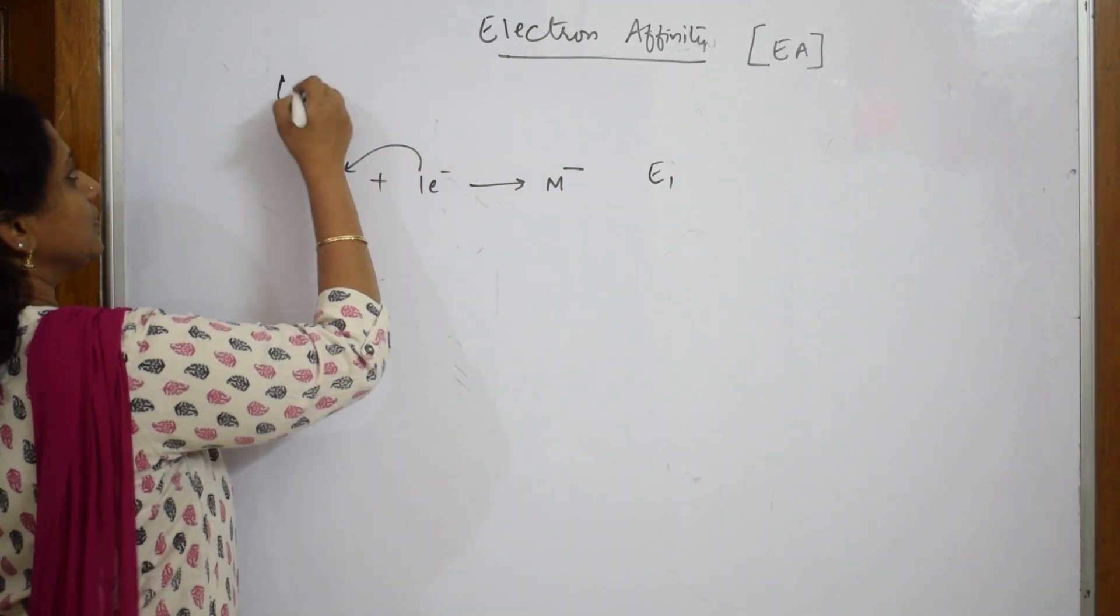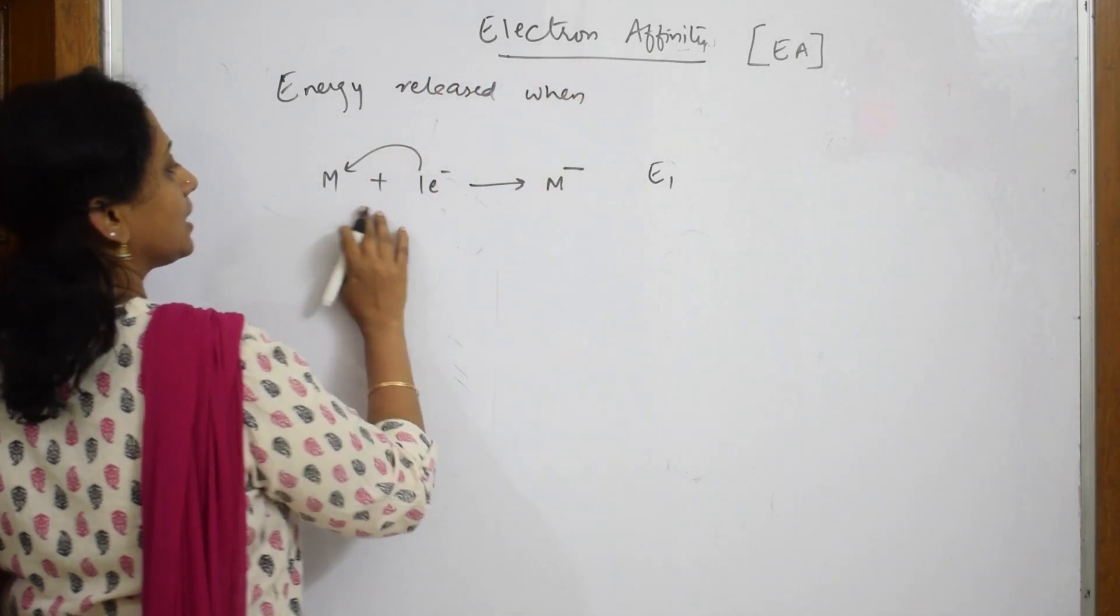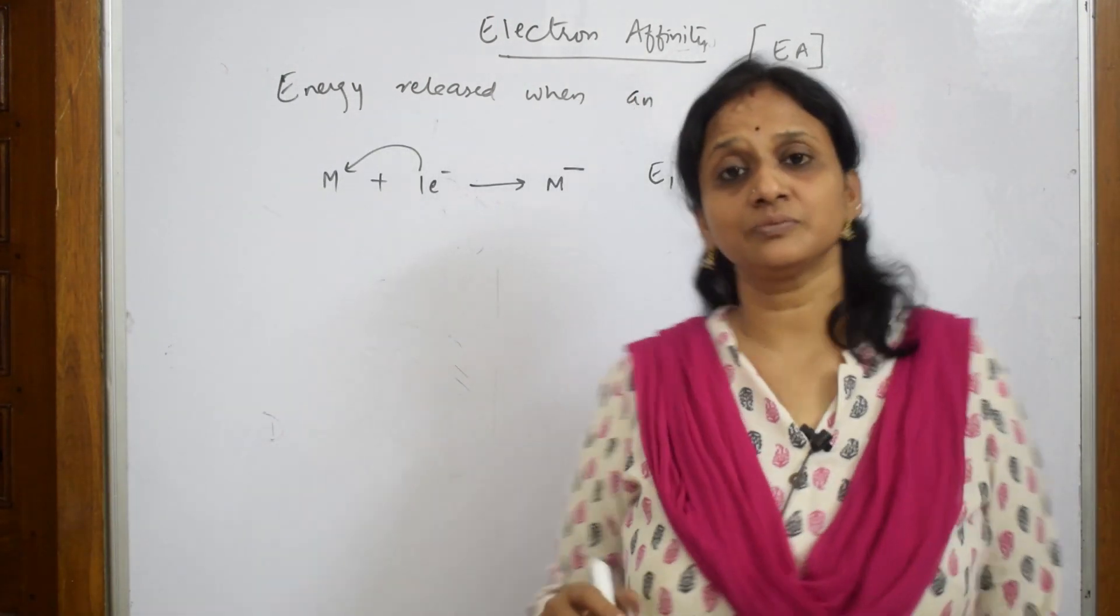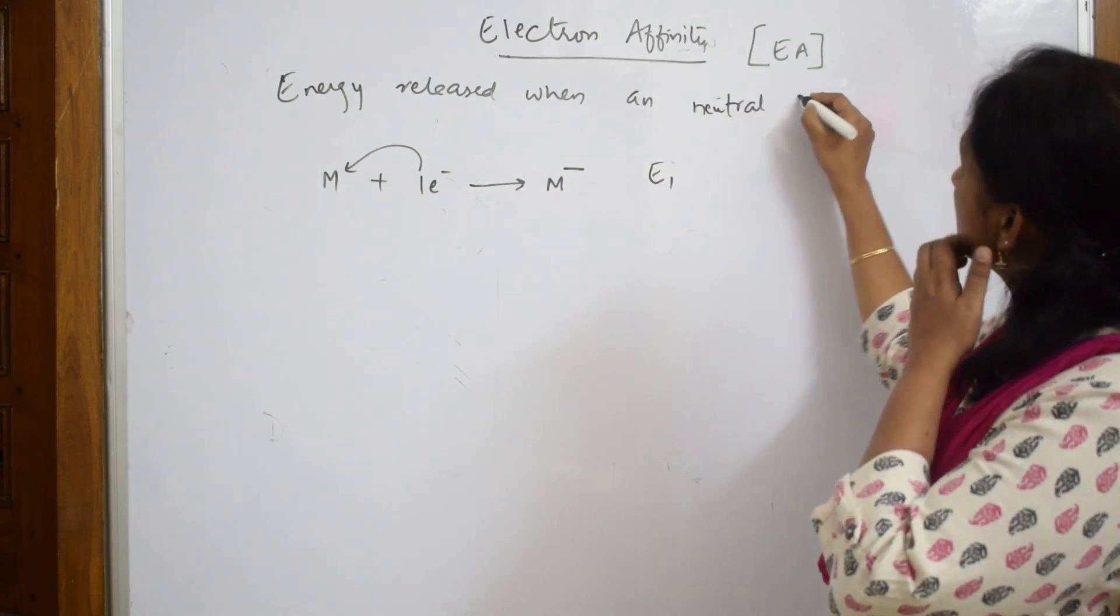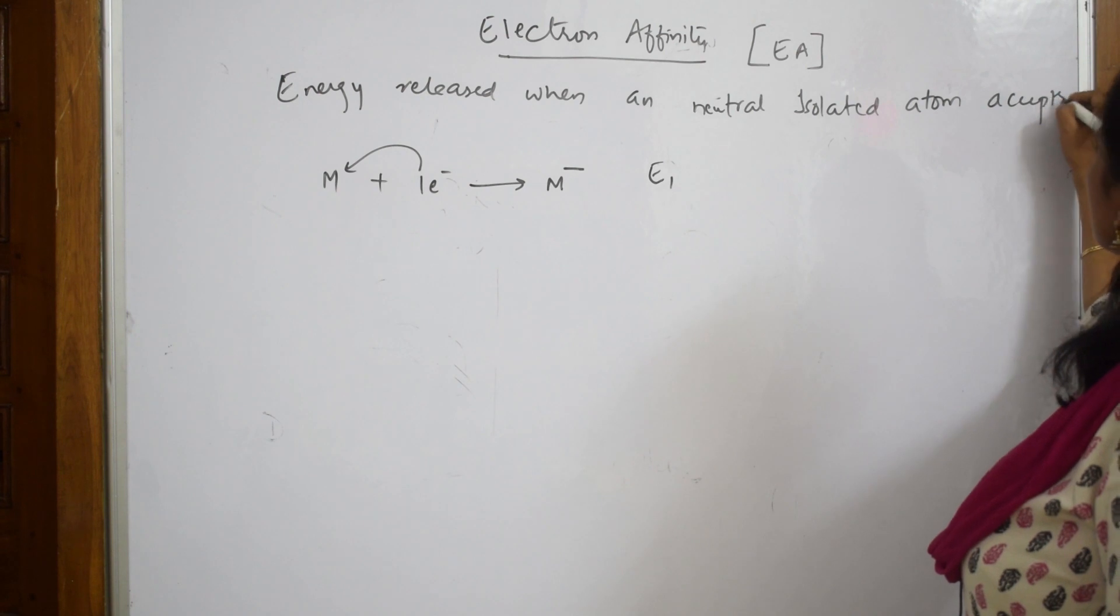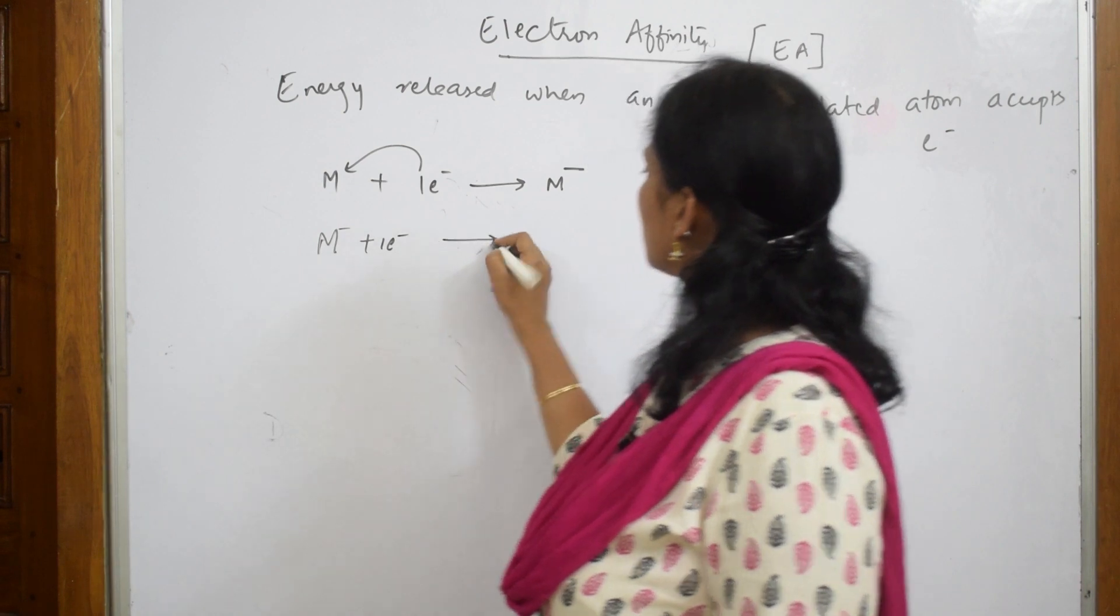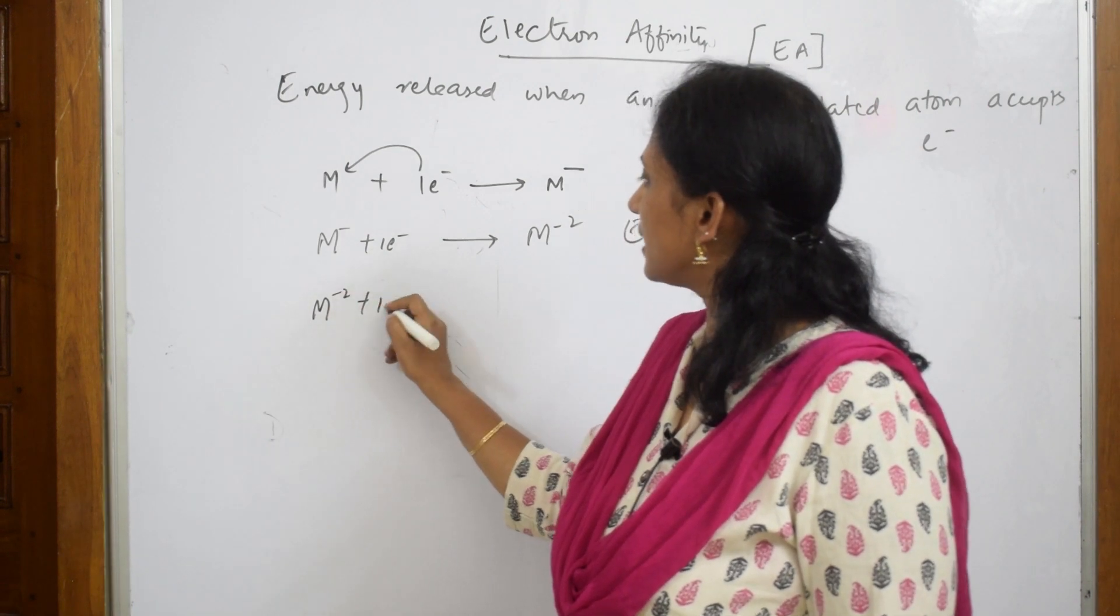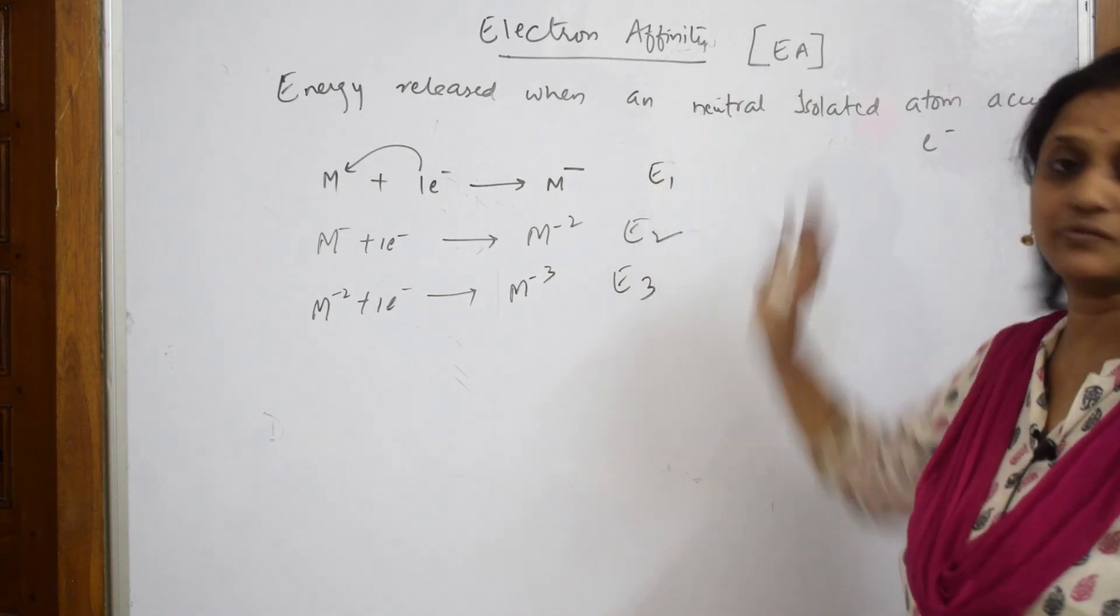How can I define this? The energy released when a neutral isolated atom accepts an electron. Simple. I'm taking M minus, adding one more electron, it becomes M minus 2, so electron affinity is E2. The same thing, M minus 2 plus one more electron becomes M minus 3, that's E3. All these are electron affinity values.